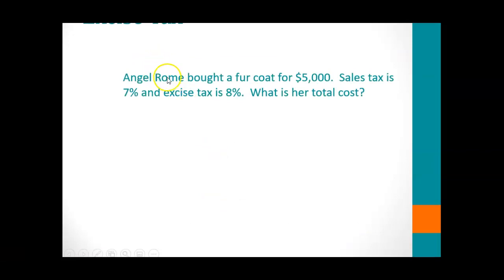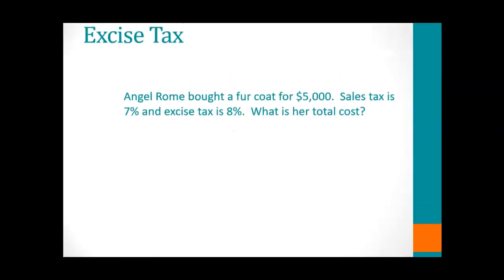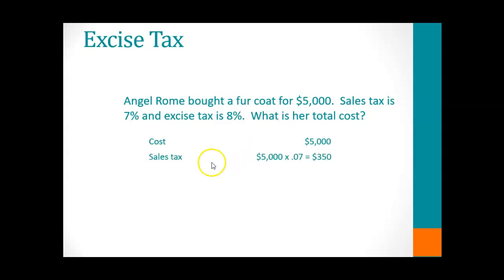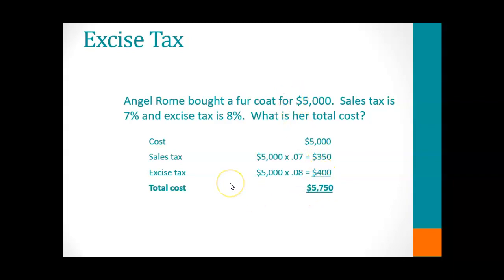For example, Angel bought a fur coat for $5,000. The sales tax is 7% and the excise tax is 8%. The excise tax is often charged on luxury items as well as non-essentials. The coat costs $5,000; the sales tax is 7% of $5,000, or $350; the excise tax is 8% of $5,000, or $400. Therefore, the total cost for the fur coat is $5,750. So on certain items, you pay both a sales tax and an excise tax.